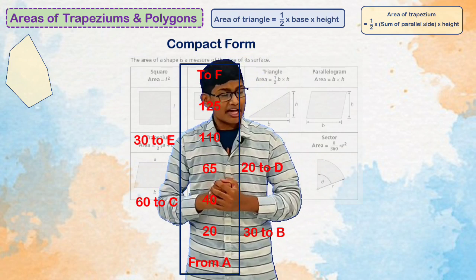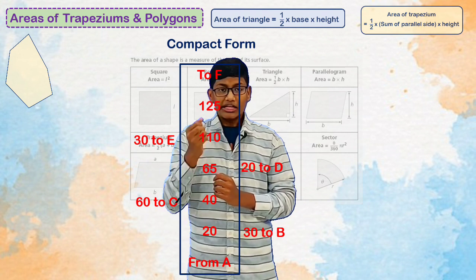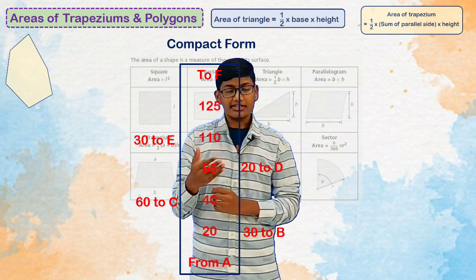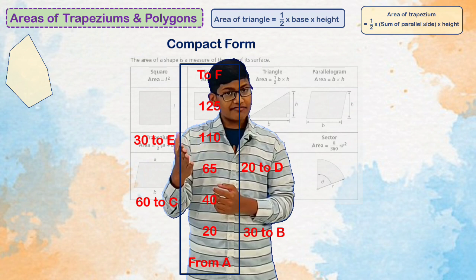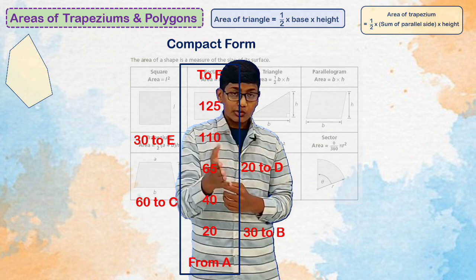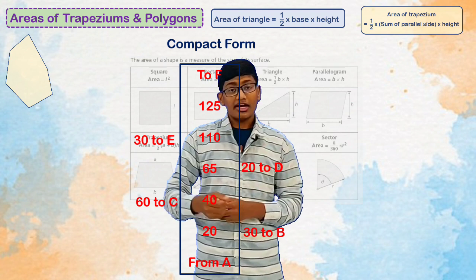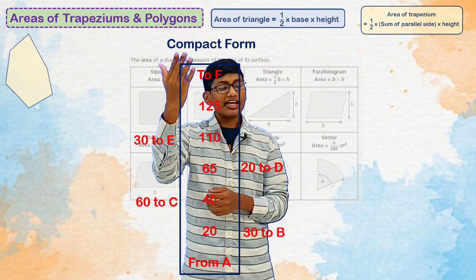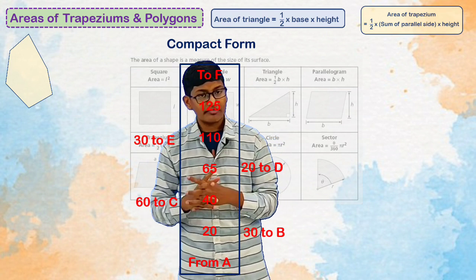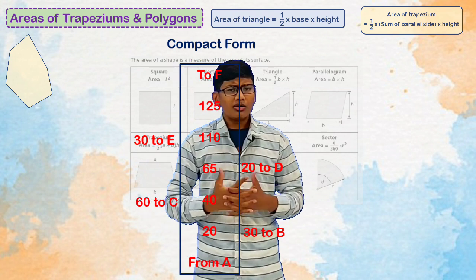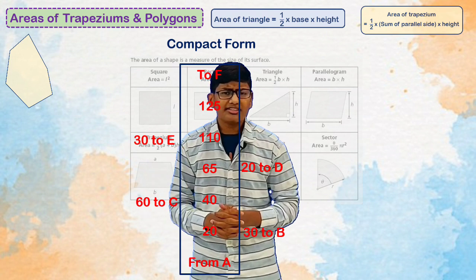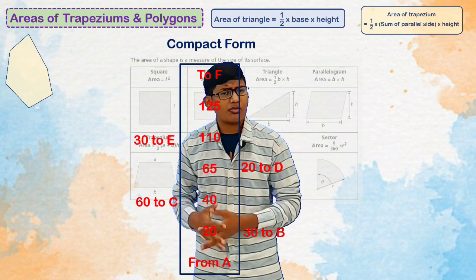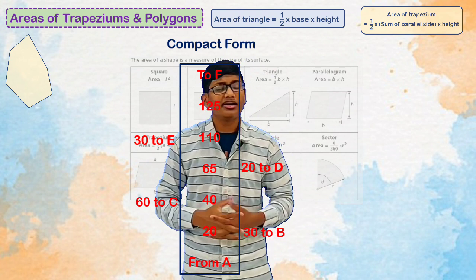In between they have given: 20, then 30 to B; 40, then 60 to C; 65, then 20 to D; and 110, then 30 to E. They have also given 125 as the total distance to F.